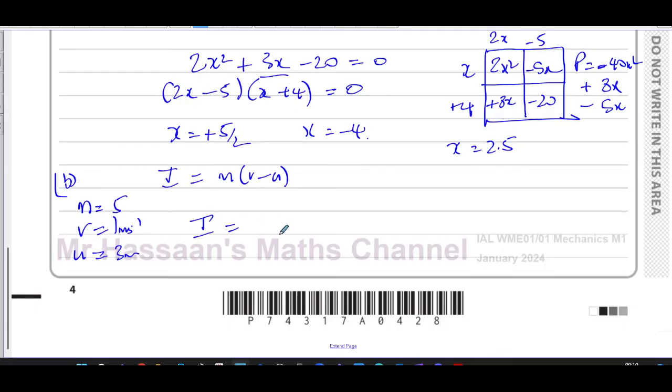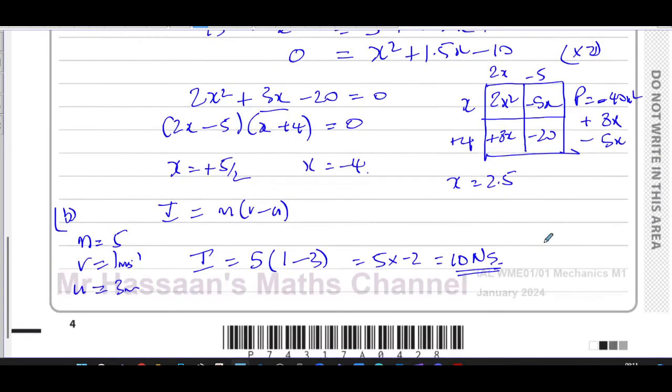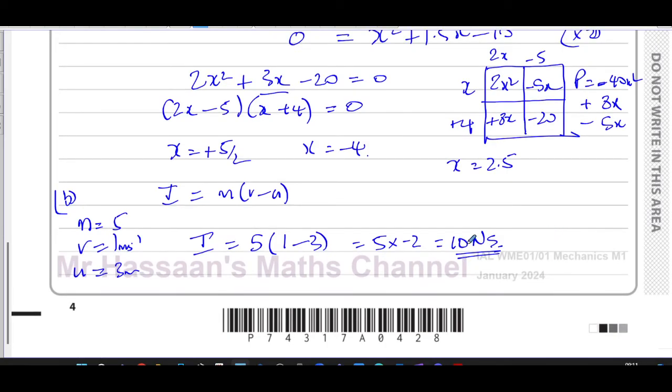So the impulse is the mass, which is 5, times the change in velocity, which is 1 minus 3. That's going to be 5 times minus 2, which is negative 10. And that is impulse measured in newton force times time, newton seconds. So that's the impulse exerted on A by B in the collision.